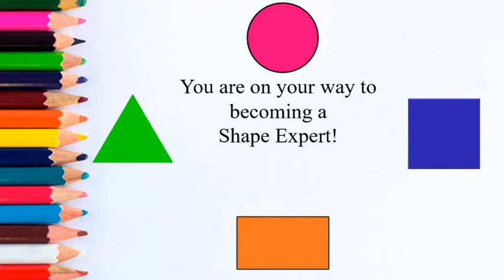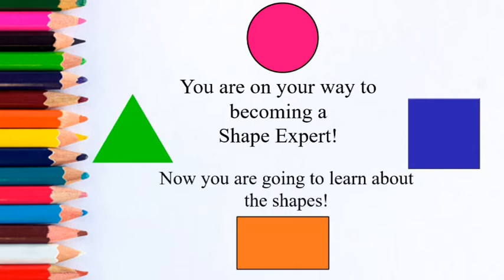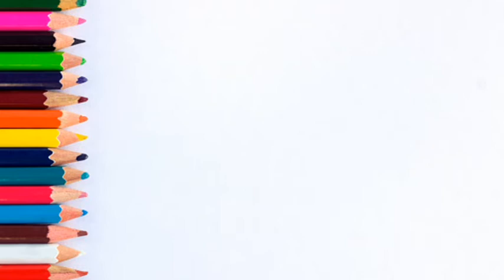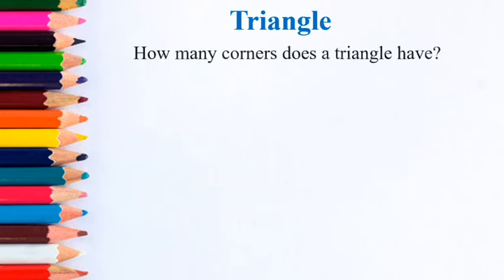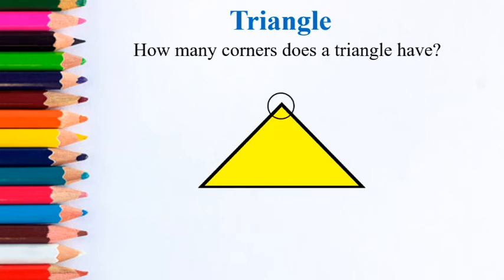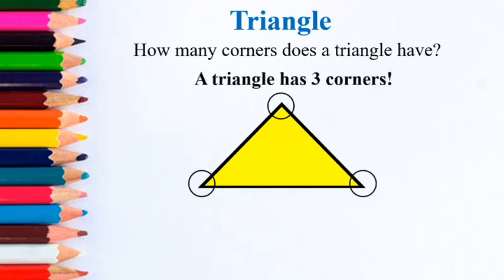Students, you are on your way to becoming a shape expert, and now you are going to learn about the shapes. The first shape you are going to look at is called a triangle. How many corners does a triangle have? Let's count — one, two, three. So a triangle has three corners.